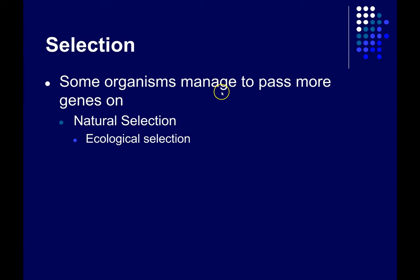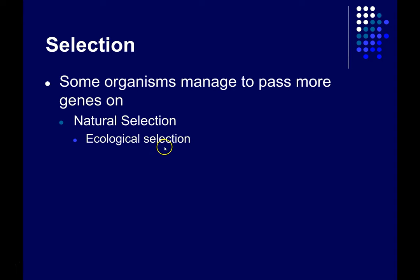How does this work? There are a couple of different mechanisms within natural selection. How is it that some organisms manage to pass their genes on at a higher rate than others? Ecological selection is one mechanism within natural selection, and this is the one that most of us think of when we think of natural selection.